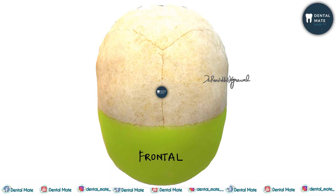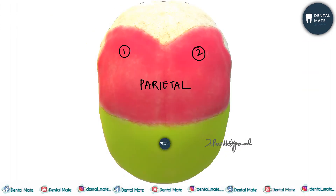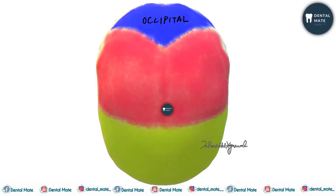From the Norma Verticalis, the skull is ovoid in shape, which is wider posteriorly than anteriorly. The bones seen in the Norma Verticalis are the upper part of the frontal bone anteriorly, the two parietal bones, and the upper part of the occipital bone posteriorly.